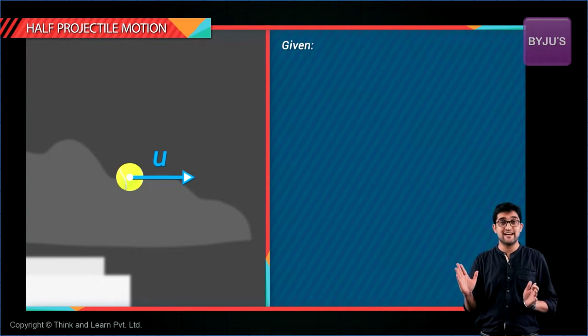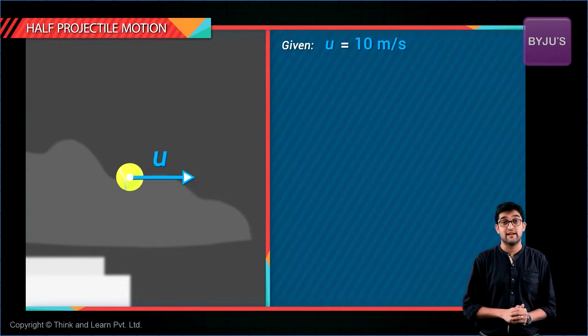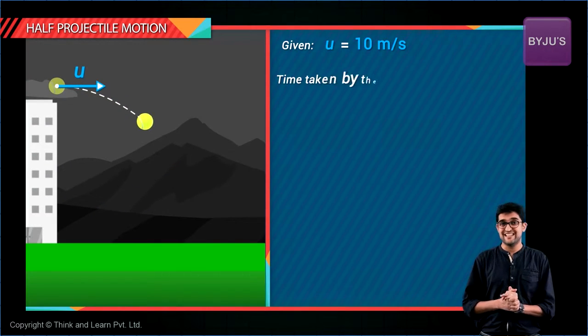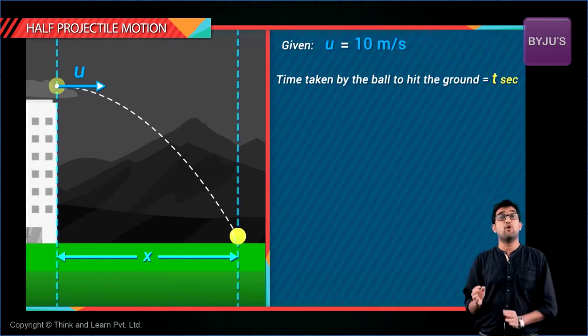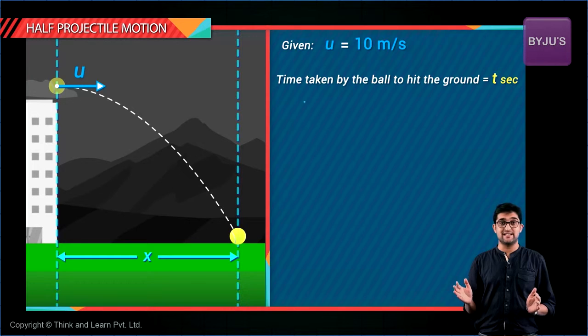along the horizontal direction the speed is 10 meter per second, there's no acceleration. So if I take the time it hits the ground as t seconds, the distance from the point where it is projected on the horizontal direction